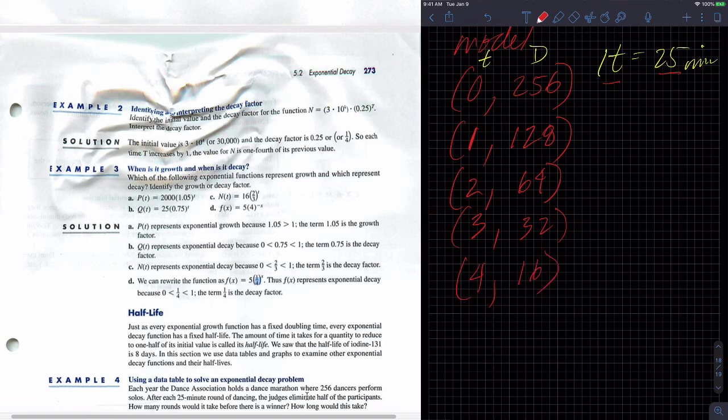Four, I'm going to have 16 left. And these are individual dancers. We're not talking about pairs or anything like that. Five, I'll have eight. Six, I'll have four. Seven, I'll have two. And after eight 25-minute periods, I'll have one left.